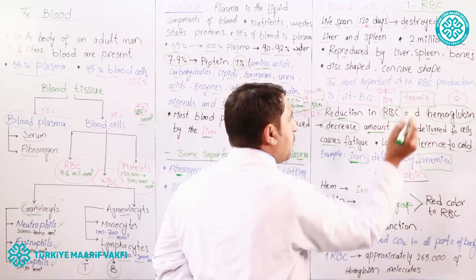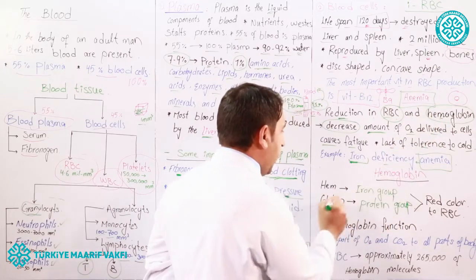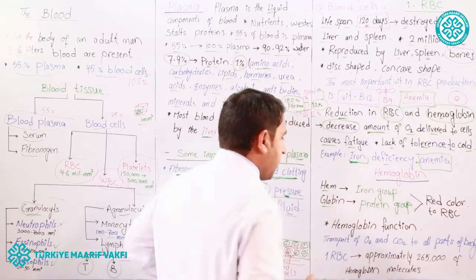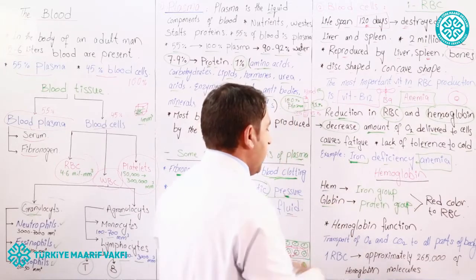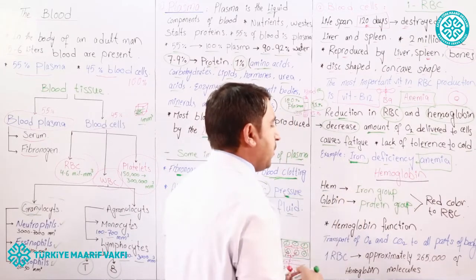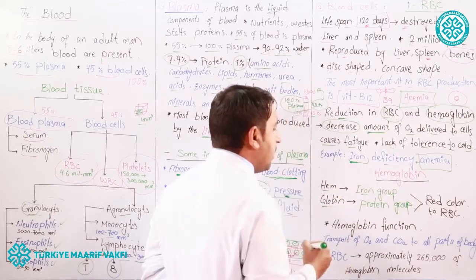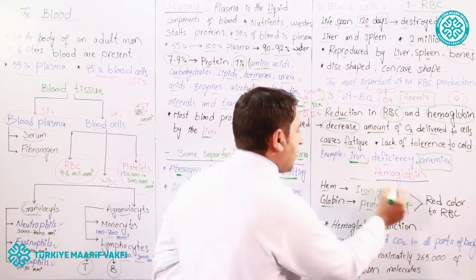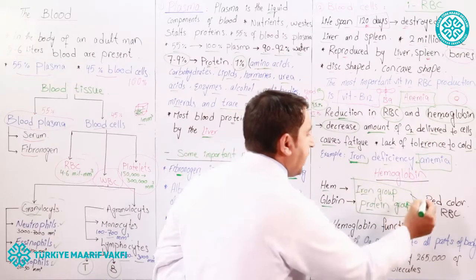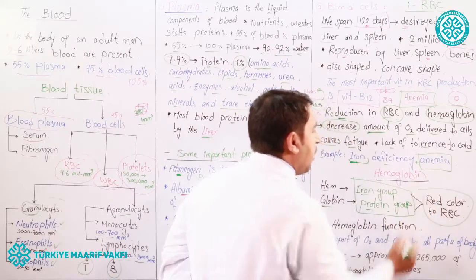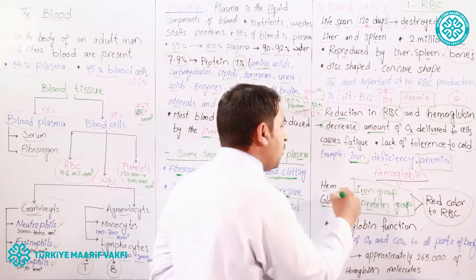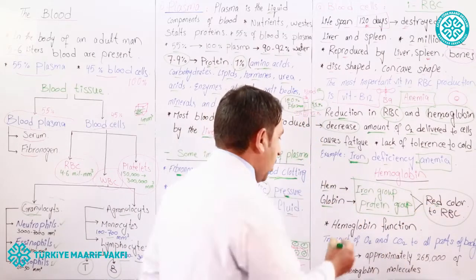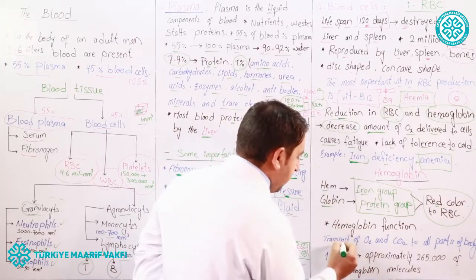Hemoglobin is made from two parts: the first part is heme — the iron group of the RBC — and the second part is globin, which is a protein group. When they combine, we get hemoglobin, which gives red color to our blood. The function of hemoglobin is to transport oxygen and carbon dioxide to all parts of the body.